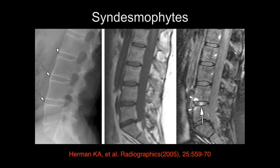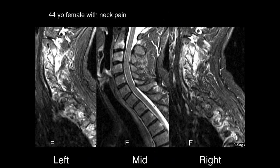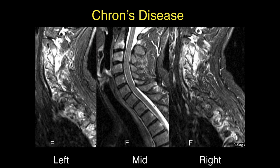44-year-old with neck pain. The facets have a lot of edema and there's also edema in the surrounding tissues and vertebral bodies at these levels. This could be an inflammatory arthropathy — and it turns out this is Crohn's disease. Inflammatory bowel disease falls in the same category in terms of the MR appearance of inflammatory lesions in the spine.